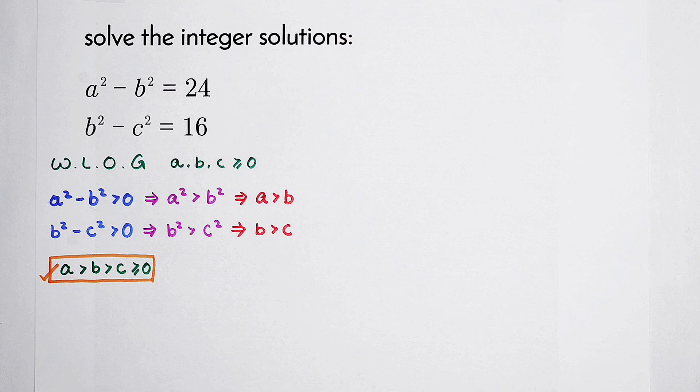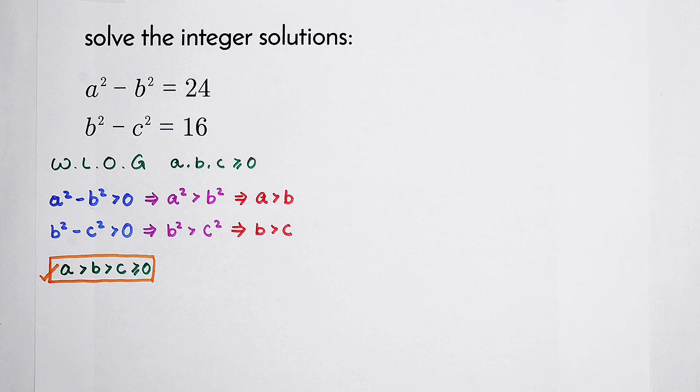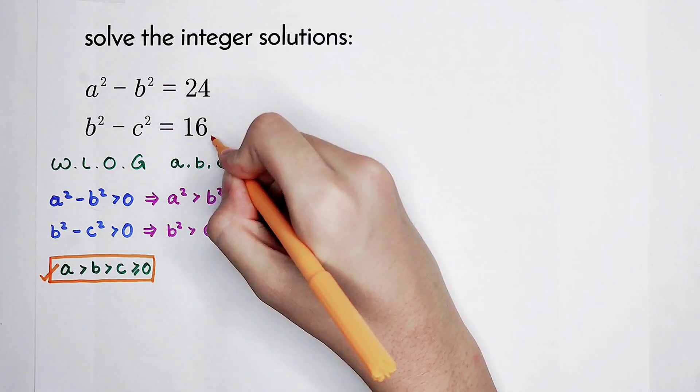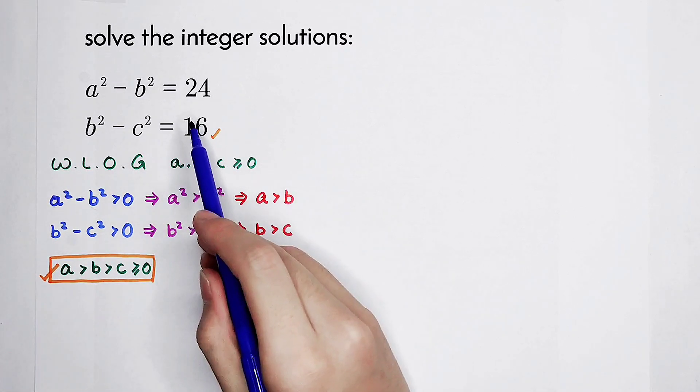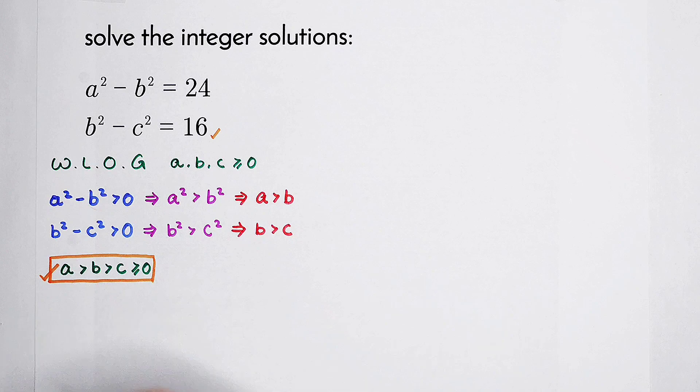From which equation should we start? Of course, from the second one. Why? Because 16 is small and it's a square number. It doesn't have so many factors as 24.